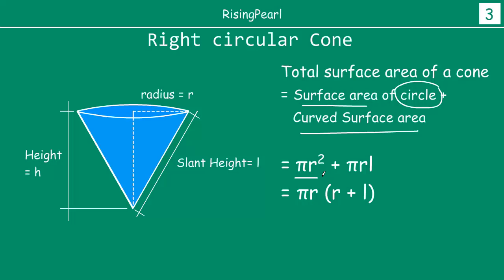And the curved surface area is πrL. So if you take πr common, it will be πr times (r + L). So this is going to be the formula for total surface area of a right circular cone.